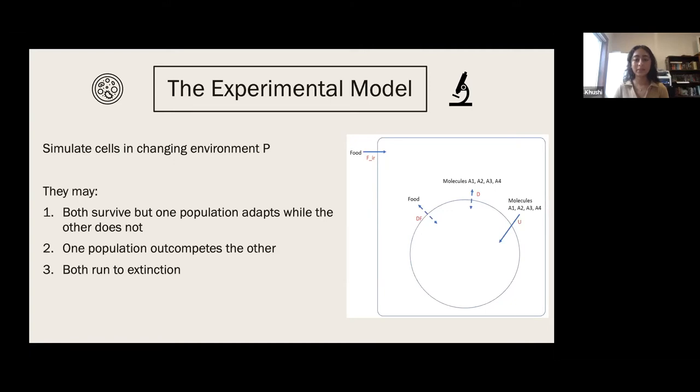We establish P, the environmental parameter, as the independent parameter that fluctuates and can be used to represent anything from pH to temperature or salinity. To seek an answer to our question, we impose this model on two populations of single cells to examine their response. In one population, the cells can adapt to the environmental parameter and in the other, they cannot.